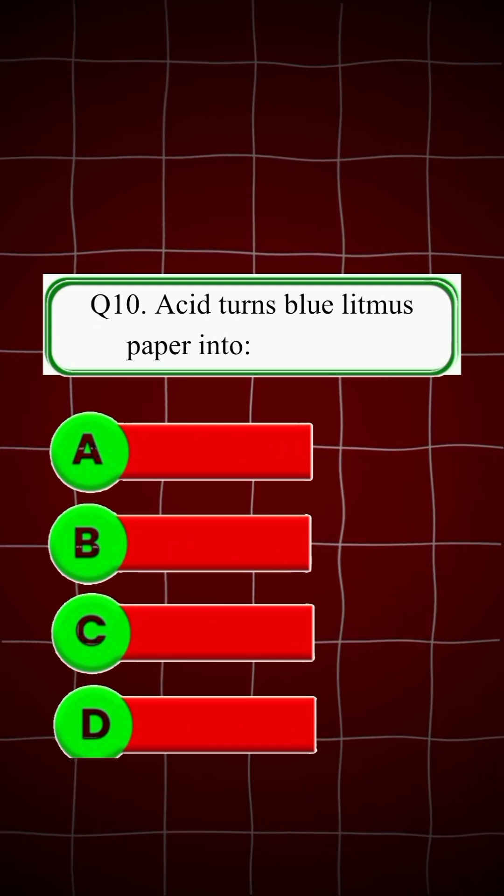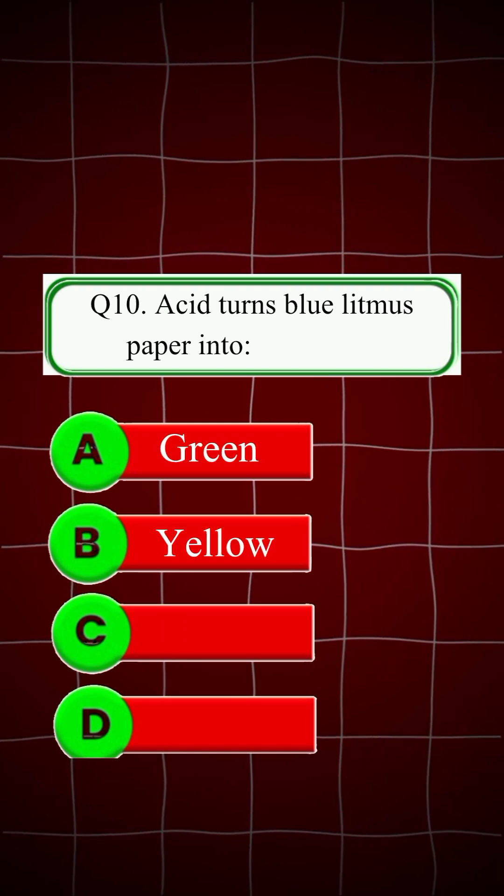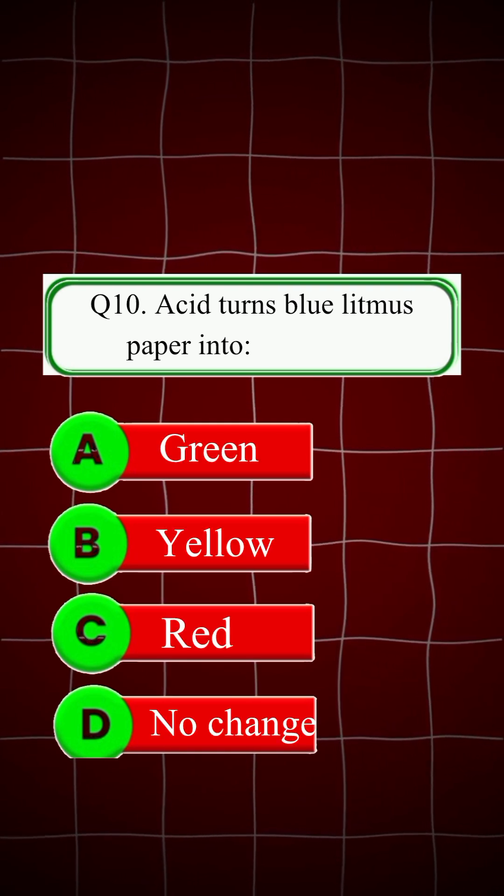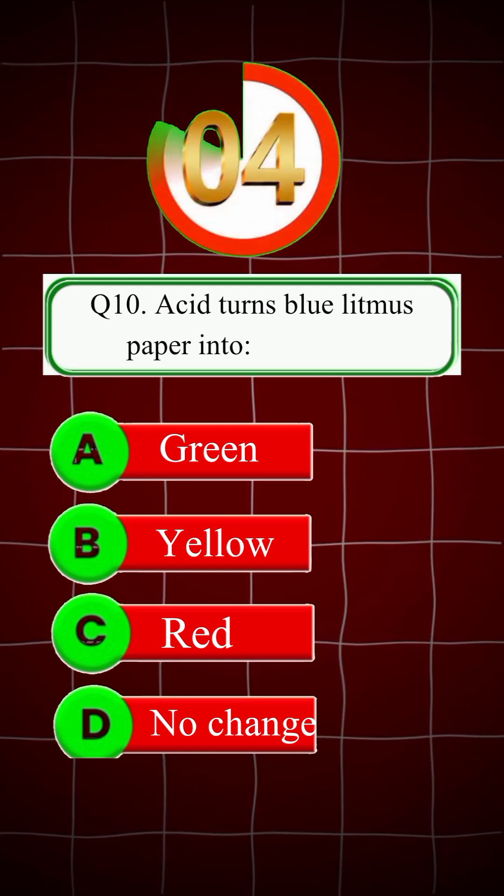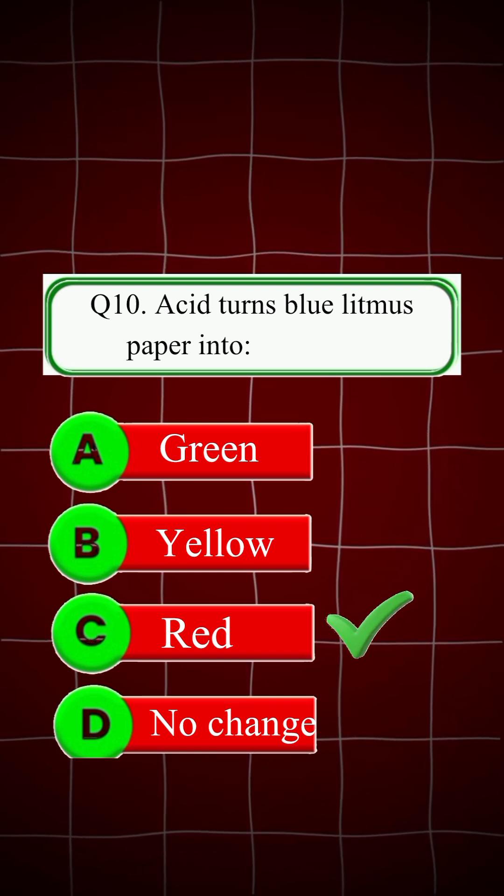Question 10: Acid turns blue litmus paper into: A. Green, B. Yellow, C. Red, D. No change. Right answer is C, Red.